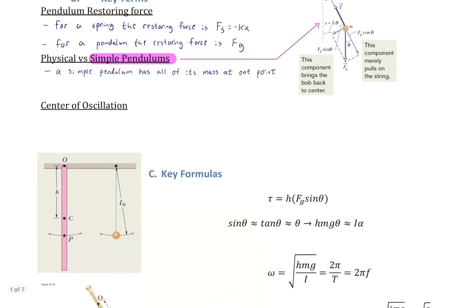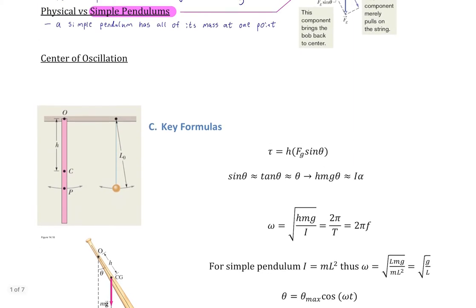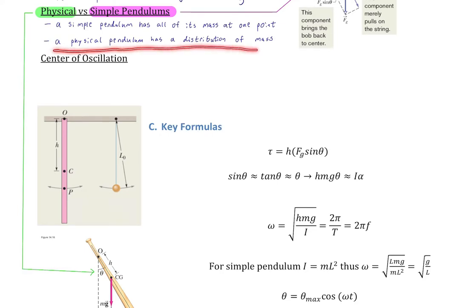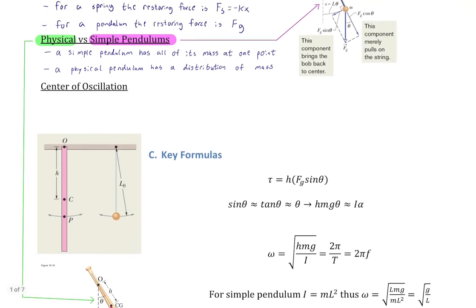A physical pendulum is a pendulum that has a distribution of mass — like any real object. In this case, a physical pendulum might be a baseball bat. Often it's a rod, or we might see one as a ring pivoting about one point. It's any object with a distribution of mass, and for it to be easy to deal with, it's usually a nice geometric distribution.